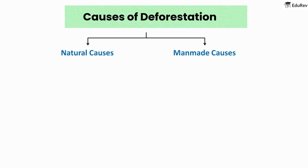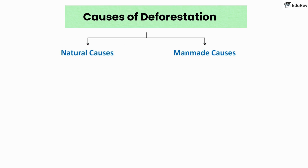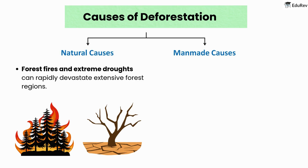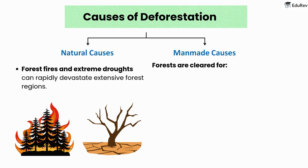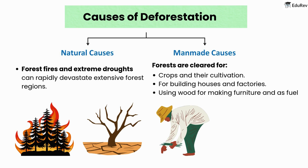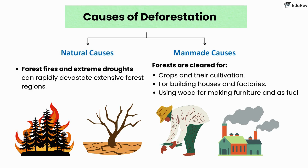There are two types of causes of deforestation. Natural causes include forest fires and extreme droughts that can rapidly devastate extensive forest regions. Man-made causes include clearing forests for crops and cultivation, building houses and factories, and using wood for making furniture and as fuel.